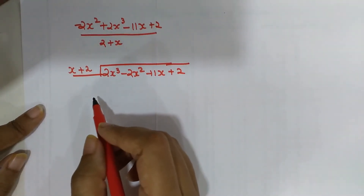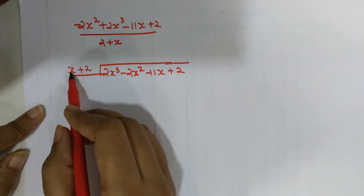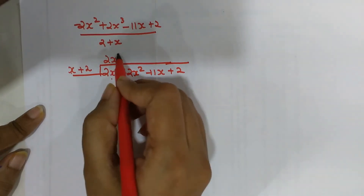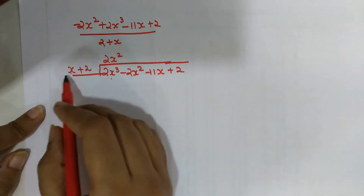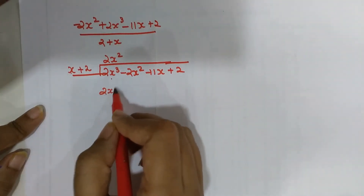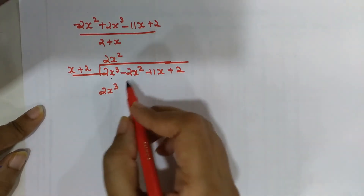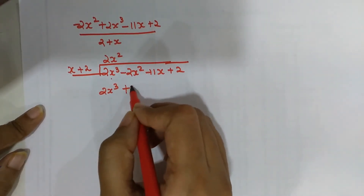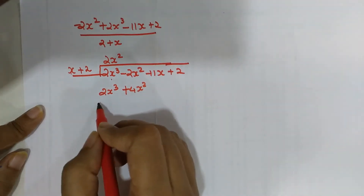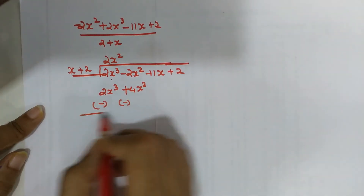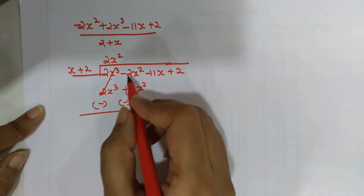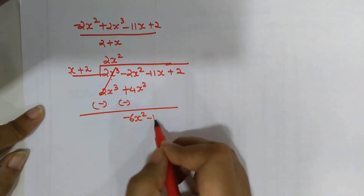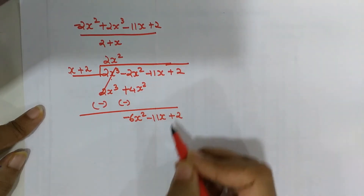Now I need to convert x into 2x cubed, so I will multiply by 2x squared. When multiplied by x I get 2x cubed. 2x squared multiplied by 2 gives 4x squared. The signs are changed for subtraction, so 2x cubed is cancelled. Then minus 2x squared minus 4x squared gives minus 6x squared, and minus 11x plus 2 come straight down.